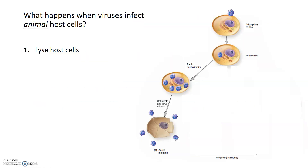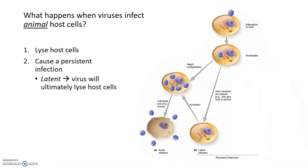Viruses can also infect plant and archaeal cells, but next we focus on what happens when they infect an animal or human host cell. There are several different outcomes once a virus attaches, enters, assembles, and releases new virions. The virus can kill or lyse the host cell, leading to an acute or short-term infection. Some viruses cause persistent or long-term infections. One type is a latent infection, where the virus attaches, enters, and then lies dormant until activation by stress or another trigger, after which it enters synthesis, assembly, and release — ultimately lysing those cells too.